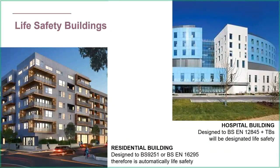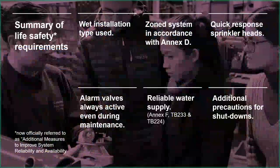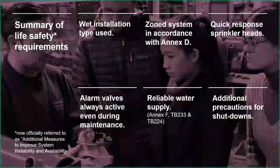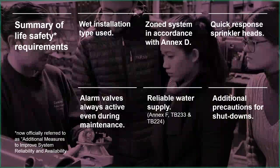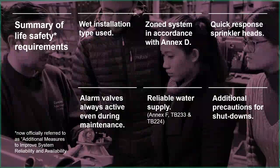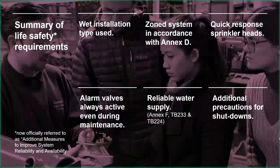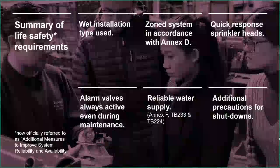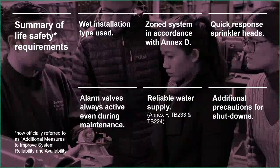Life safety is a term we use quite readily, but it was actually renamed a few years ago. It's now officially called 'additional measures to improve system reliability and availability.' That's its full title, but we still use life safety as the quick term. That long name really does describe exactly what it's about - additional measures to improve system reliability and availability. If the sprinklers are activated you want them to work reliably, and for life safety we want to put additional measures in place.